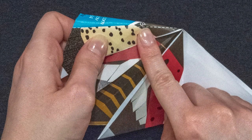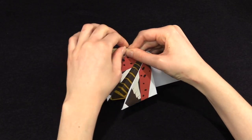Look for the line labeled 10. Fold along this line and repeat on the other side.